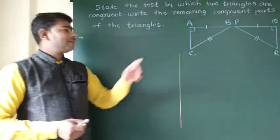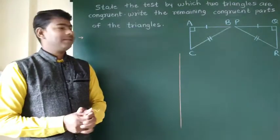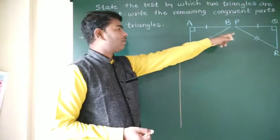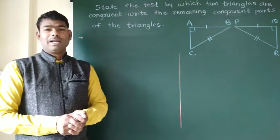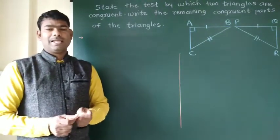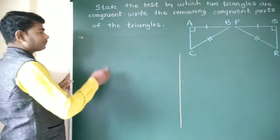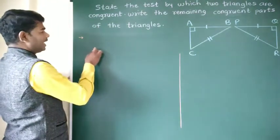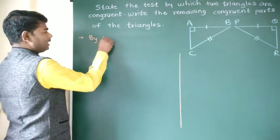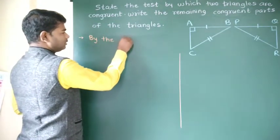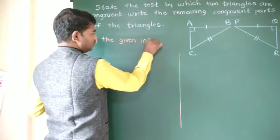The two triangles are congruent. The first part is the given information, communicated by the given information.